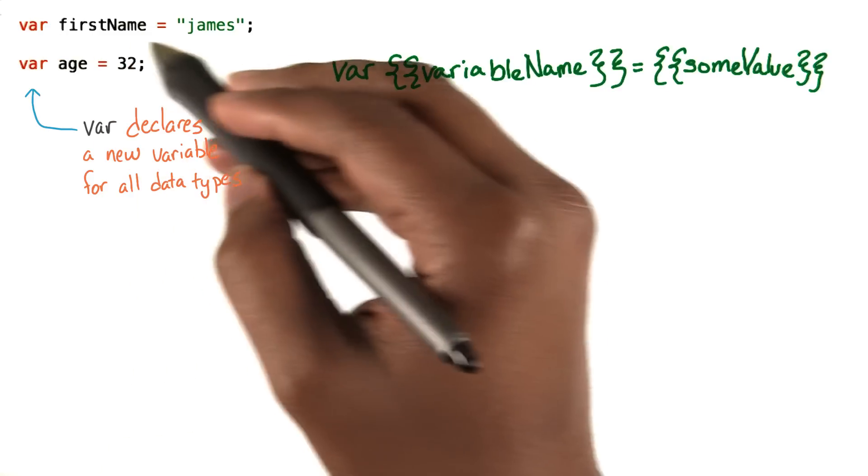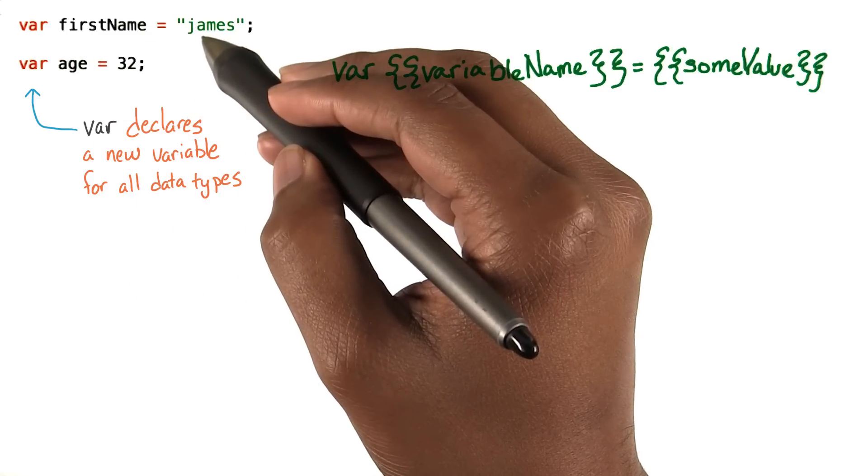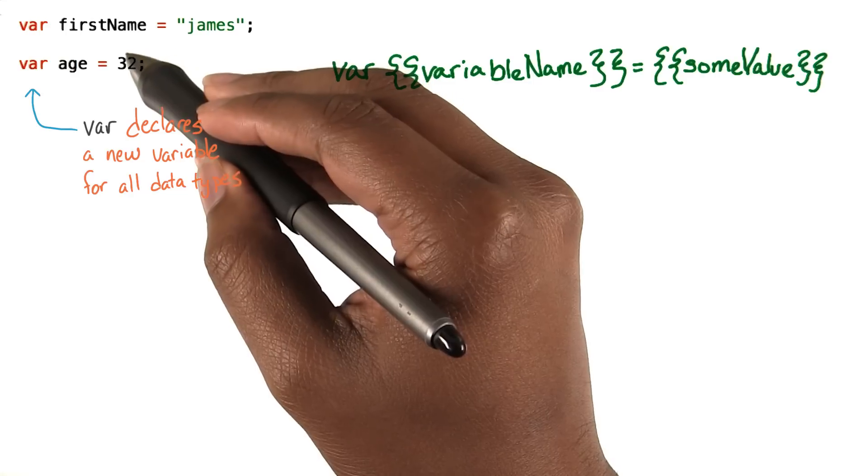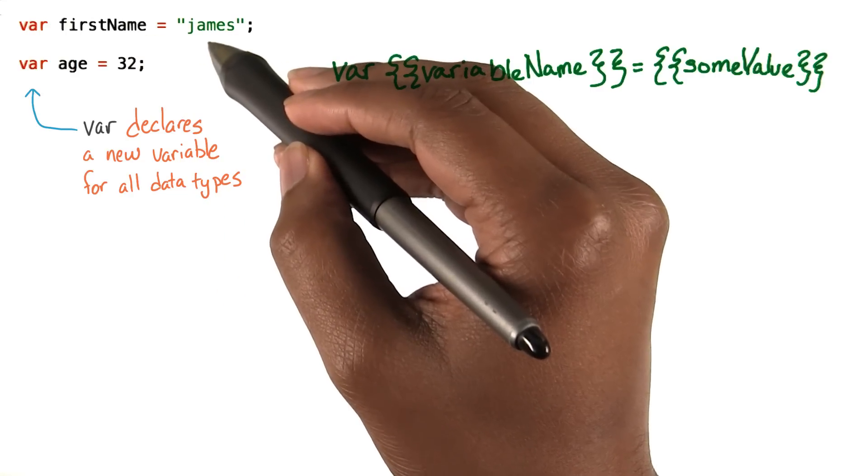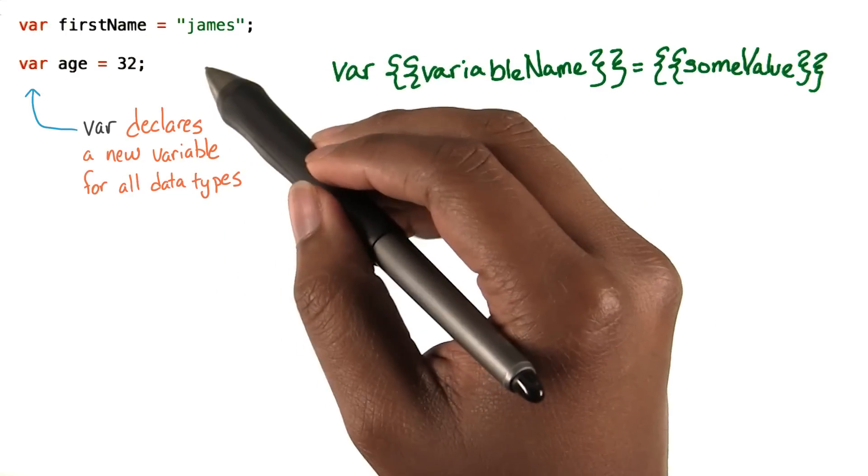In the example here, we're creating a variable called firstName and assigning it the string James. The string comes in closing quotes.